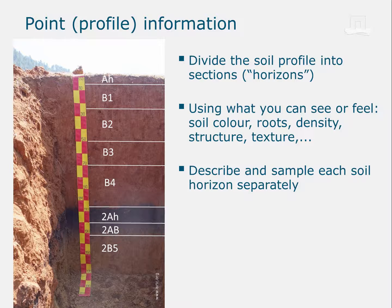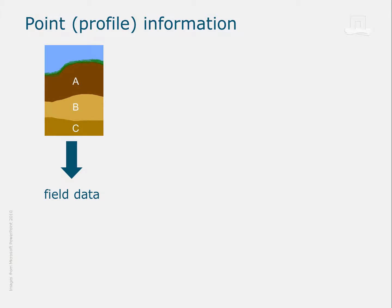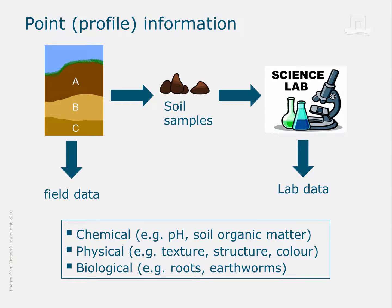After that, you take a sample from each horizon. With some expert knowledge, you could make an attempt to classify your soil in the field according to your national or an international classification scheme. Following this procedure, you get a lot of information from just one soil profile. So from your soil profile, you get field data. And from the samples, you get data on the soil characteristics, which can be determined more precisely in a lab than in the field. In the end, you will have data on the chemical, physical, and biological characteristics of the soil you have chosen to investigate.